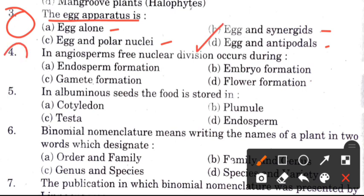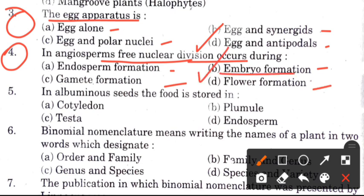Question 4: In angiosperms, when does free nuclear division occur? Options are: endosperm formation, embryo formation, gamete formation, and flower formation. The answer is B, which is embryo formation.